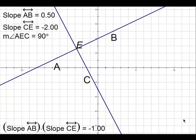Now let's look at two perpendicular lines. In this graph, I know that line AB is perpendicular to line CE, because the measure of angle AEC is 90 degrees.